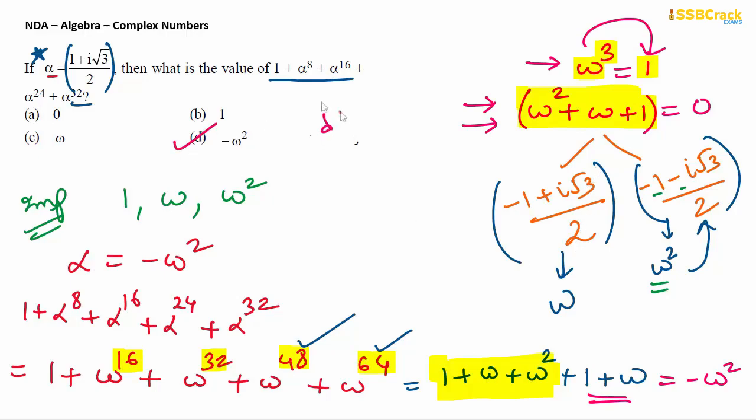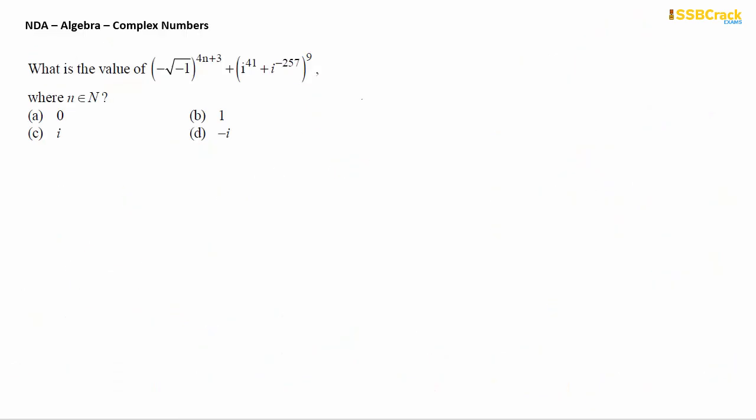Hence the answer is option D. Next question: What is the value of minus root of minus one raise to 4n plus 3 plus i raise to 41 plus i raise to minus 257 raise to 9?